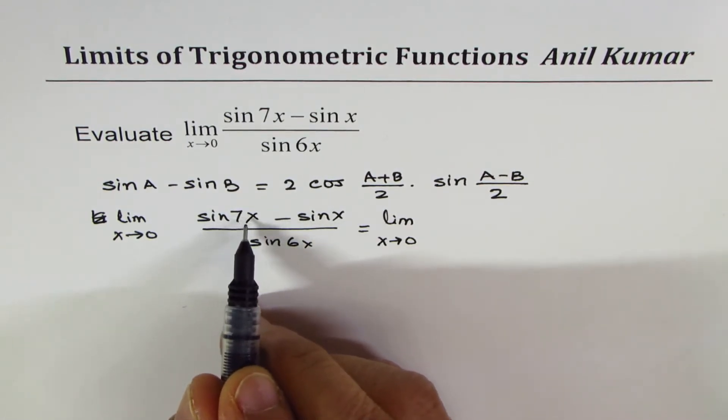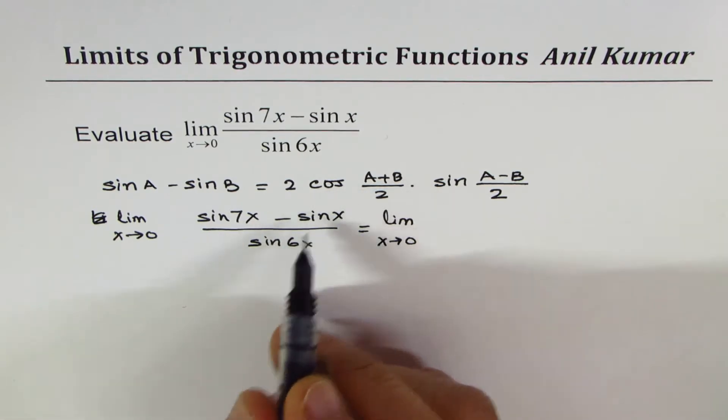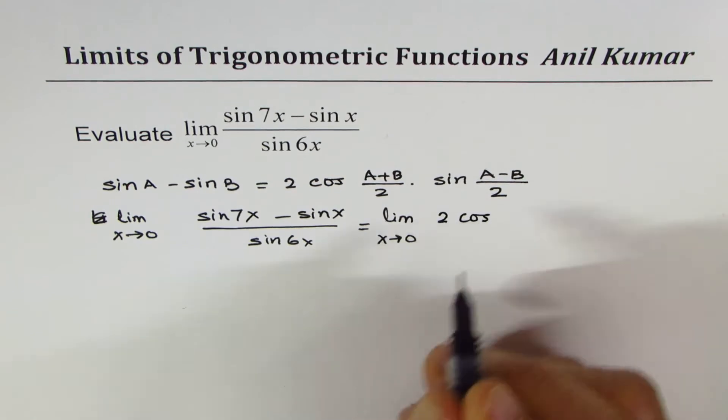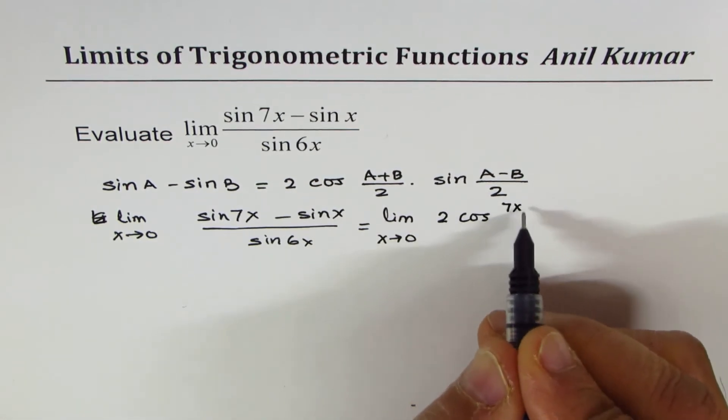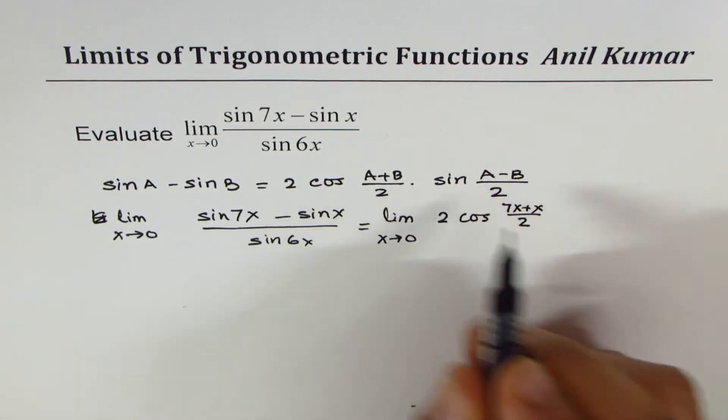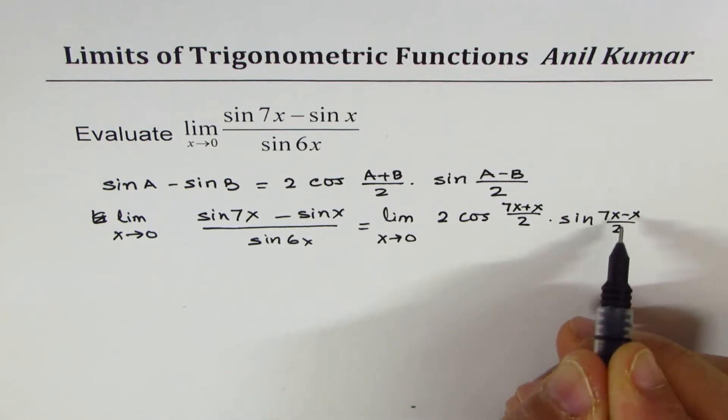Limit x approaches 0. We have sine a is 7x and b is x. When you add them and divide by 2, you get 2 cos of 7x plus x divided by 2, and sine of 7x minus x divided by 2.